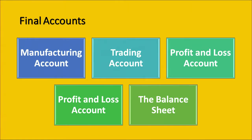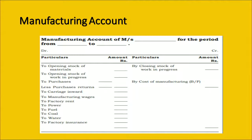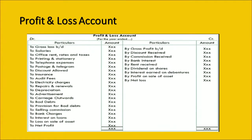Final accounts are of five categories. First is the manufacturing account, pertinent to organizations involved in manufacturing as well as the sale of goods and services. Then we have the trading account, specific to organizations not involved in manufacturing but in the sale of goods and services. The profit and loss account has expenses and losses on the debit side and profits or gains on the credit side. The balance sheet talks about the status and health of the organization. There are certain standard formats for the manufacturing account, profit and loss account, and balance sheet with debit and credit entries.